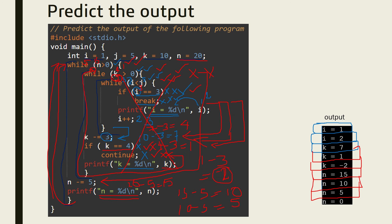5 is greater than 0 so it enters again. The inner portion is not executed. n equals n minus 5: 5 minus 5 equals 0, and that value of 0 is printed. It goes back and checks n greater than 0 — now it is checking 0 greater than 0, which is false. So it exits out of the loop and the program ends.